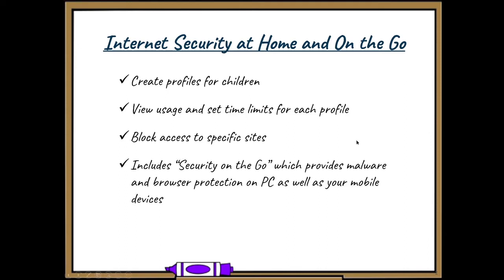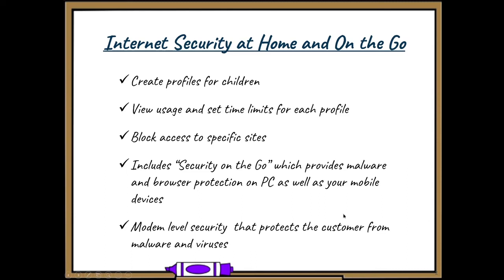It also includes security on the go, which provides browser and malware protection on PCs as well as all mobile devices — iPads, iPhones, Android phones, Chromebooks. Install Security on the Go and it protects those devices, especially useful when connecting to public Wi-Fi. We also include modem-level security that protects from malware and viruses at the modem — this is different from on the go in that it protects everything connected to the Wi-Fi network, including Ring devices, Nest devices, and things you couldn't necessarily install the on-the-go app on.